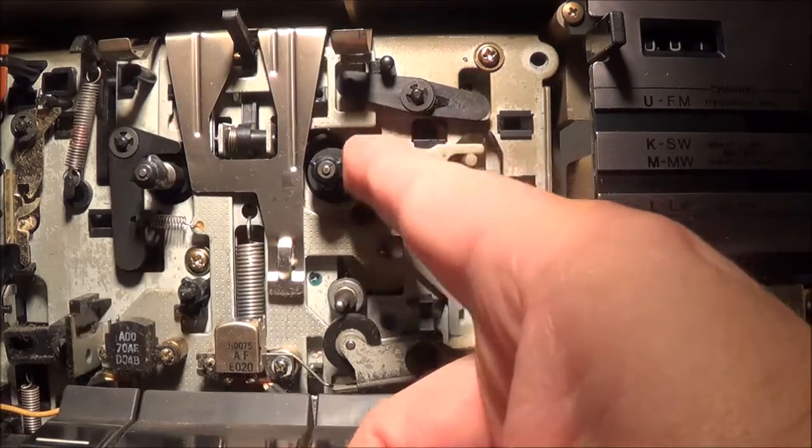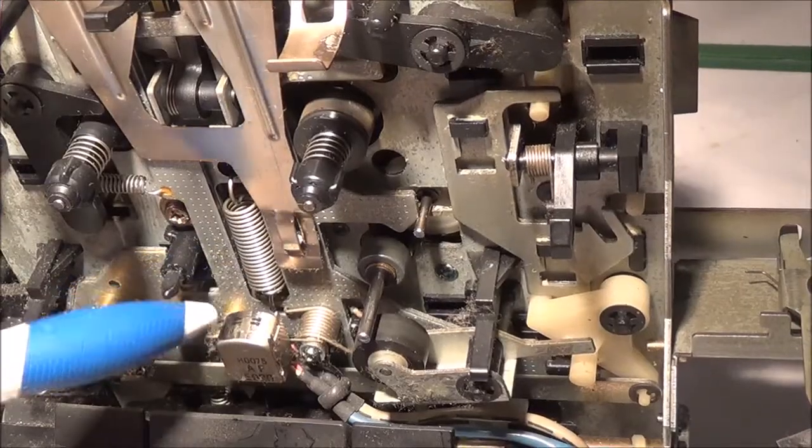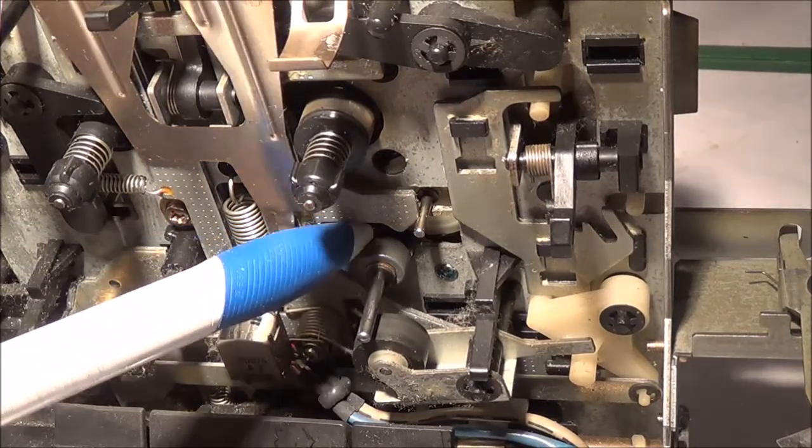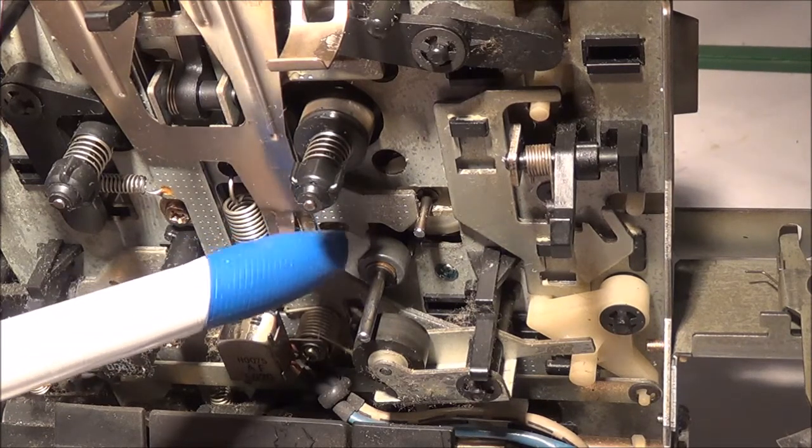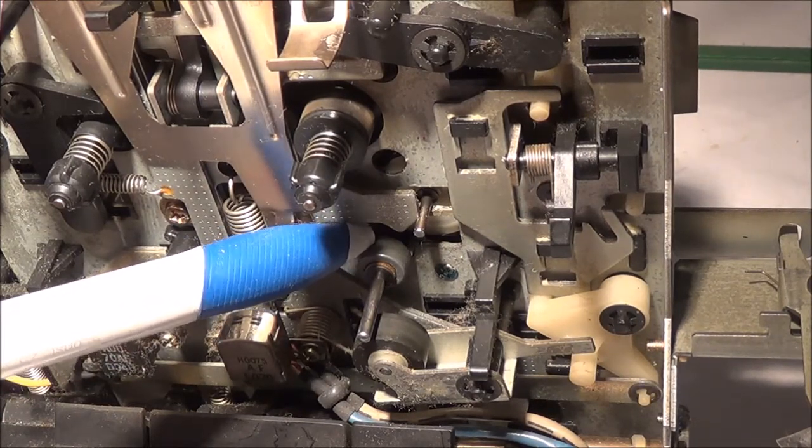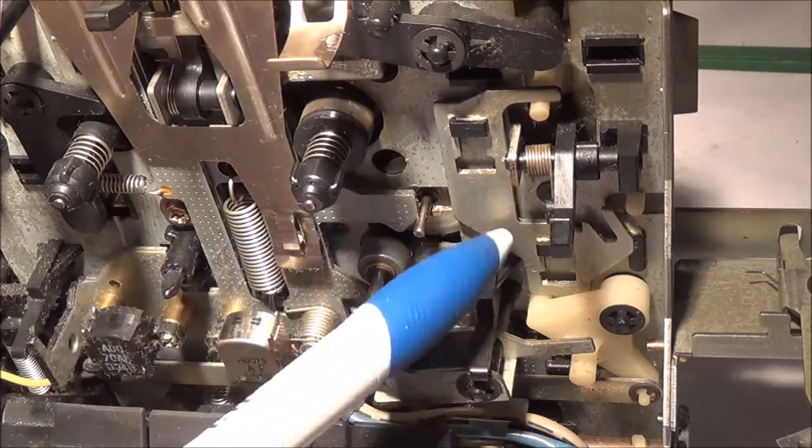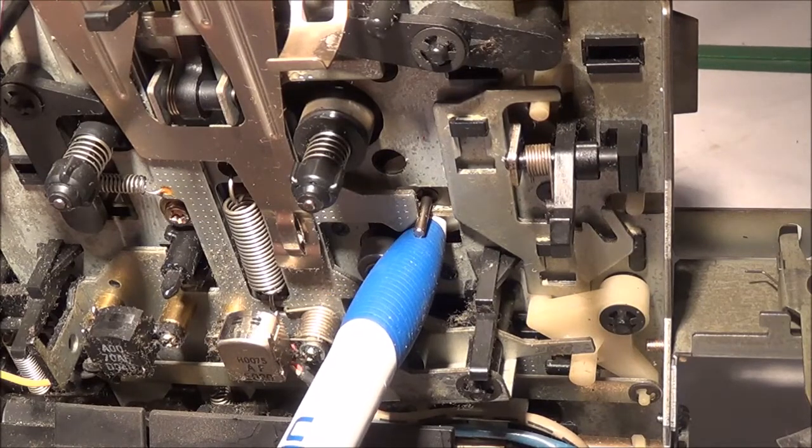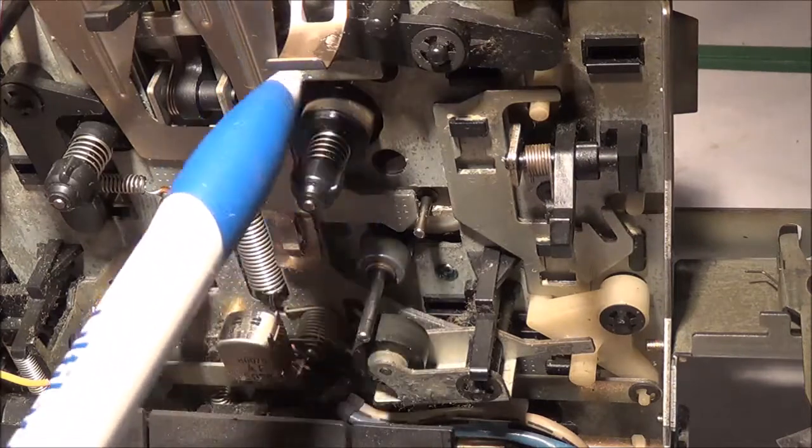I think I just figured out what the problem is. Here's the capstan, and behind this capstan is a rubber pulley which has basically almost disintegrated. What happens is when the capstan turns, this pulley here presses against this little idler wheel, and that presses against the turntable once you put it in the play position.